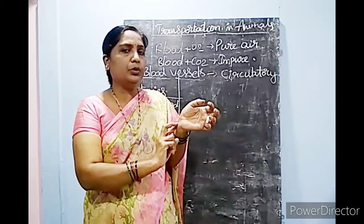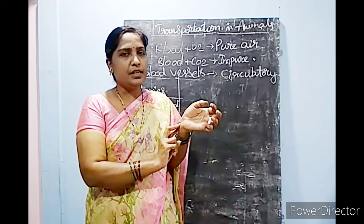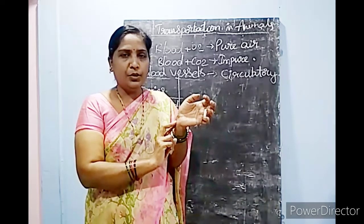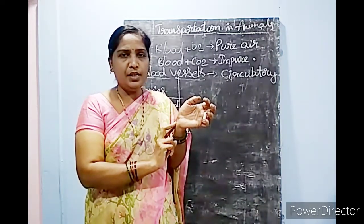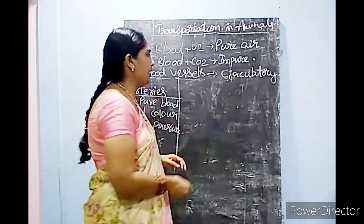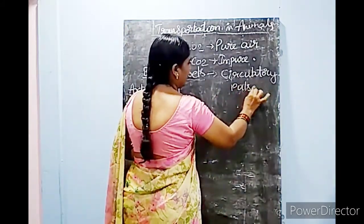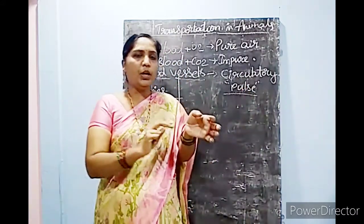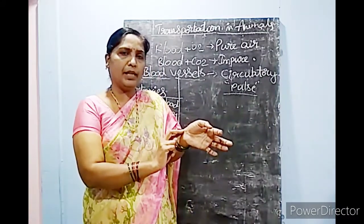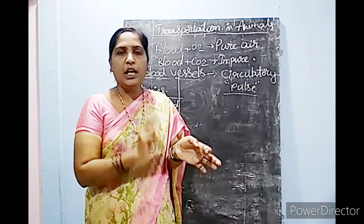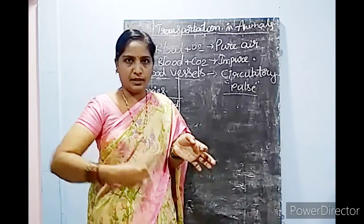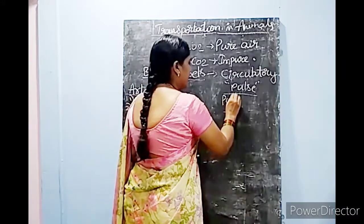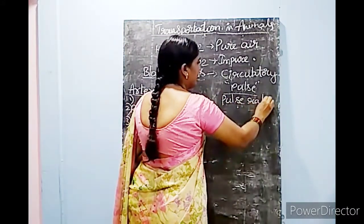You can feel some throbbing sound. You all can do this activity. This throbbing sound is known as pulse. Count this throbbing — your pulse — for one minute. How many times the pulse is beating per minute? That is known as pulse rate.